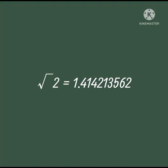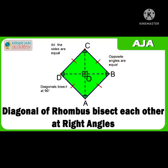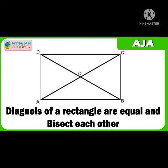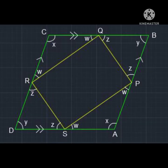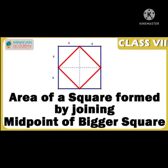He is also the person who found the value of the square root of 2 up to 9 decimal places. Some of his theorems were very simple yet meaningful: in a rhombus, the diagonals bisect each other at 90 degrees; the diagonals of a rectangle are equal and bisect each other; the midpoints of a rectangle joined form a rhombus whose area is half the rectangle; and the area of a square formed by joining the middle points of a square is half the original one.